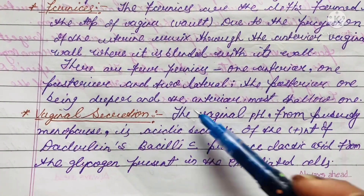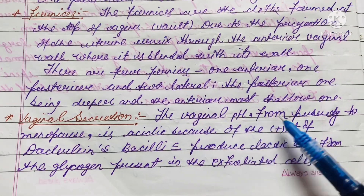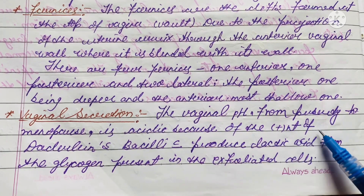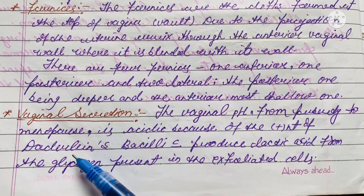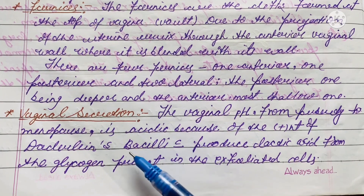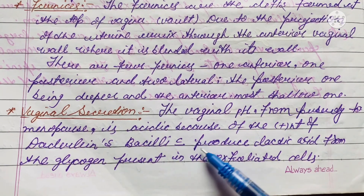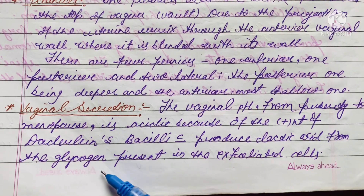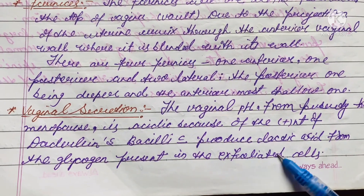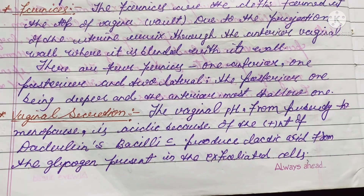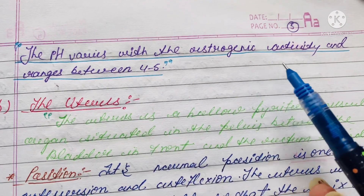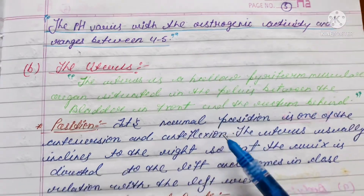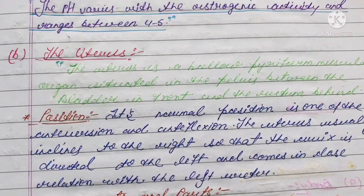Now let's look at vaginal secretion. The vaginal pH from puberty to menopause is acidic because of the presence of Döderlein's bacilli, which produce lactic acid from the glycogen present in the exfoliated cells. The pH varies with estrogenic activity and ranges between 4 and 5.